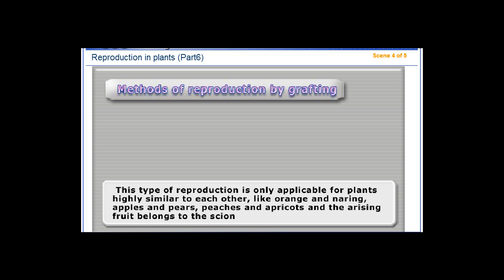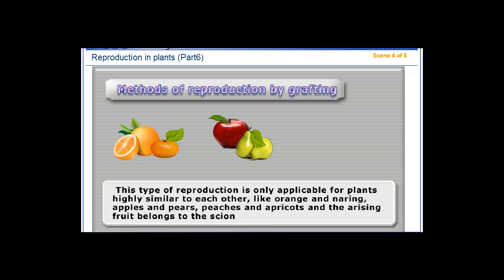This type of reproduction is only applicable for plants highly similar to each other, like orange and naring. 3. Grafting by grafting: examples include apples and pears, and peaches and apricots. The arising fruit belongs to the scion.